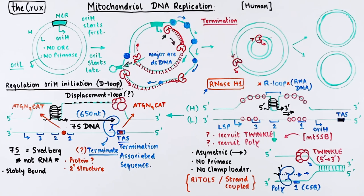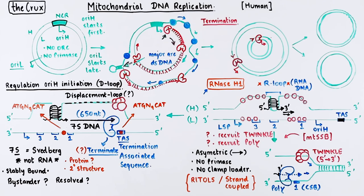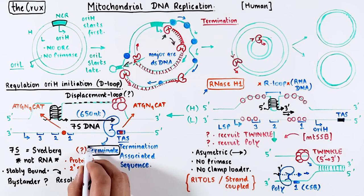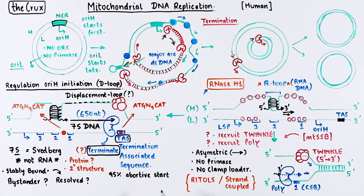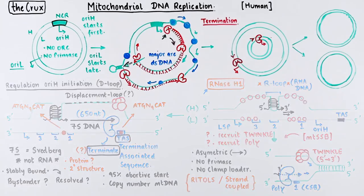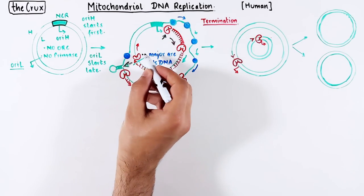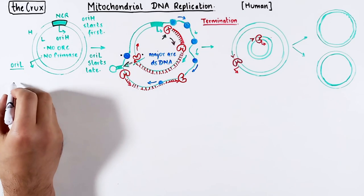The function of the displacement loop is also unclear — is it simply a bystander, an artifact of the process, or is there something more? Since 7S DNA is tightly bound to the L strand, its resolution is also unclear. This is not a rare event: almost 95% of all replication initiation is abortively terminated at this region. Some think it is a way to control the copy number of mitochondrial DNA in each mitochondrion, but no one knows exactly how. For our discussion, let's assume the DNA polymerase and Twinkle reach OriL.